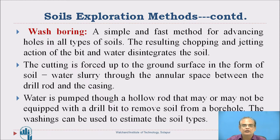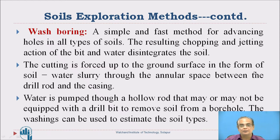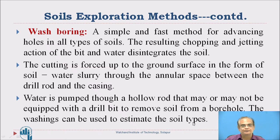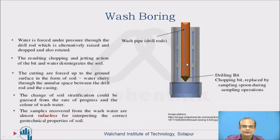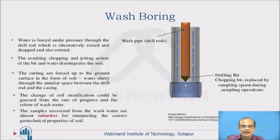The next method is the wash boring method. This is a simple and fast method for advancing holes in all types of soils. The chopping and jetting action of the bit and water disintegrates the soil. The cuttings are forced up to the ground surface in the form of soil-water slurry through the annular space between the drill rod and the casing. Water is pumped through a hollow rod that may or may not be equipped with a drill bit to remove soil from the borehole. The washings can be used to estimate soil types.